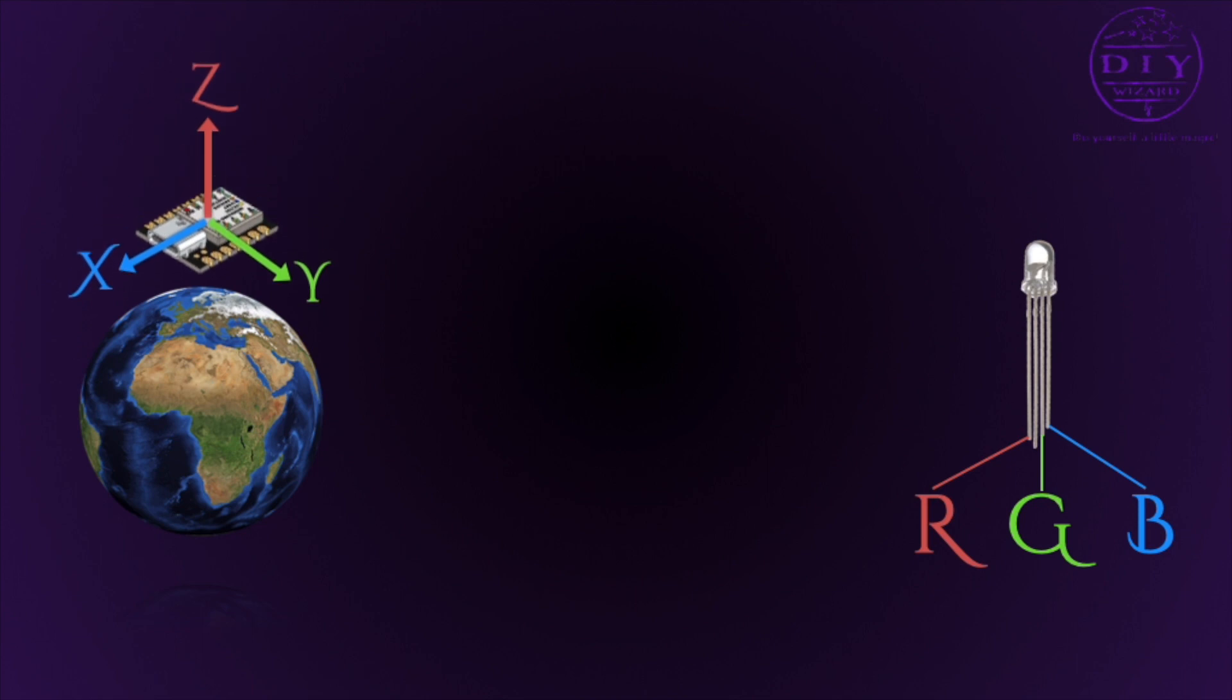Now we put our sensor on Earth and the z-axis. As you know, we have 1g in the direction of the z-axis. And 1g is 9.81 meter per square second. And that's what we measure if the sensor lies on Earth in z-axis.